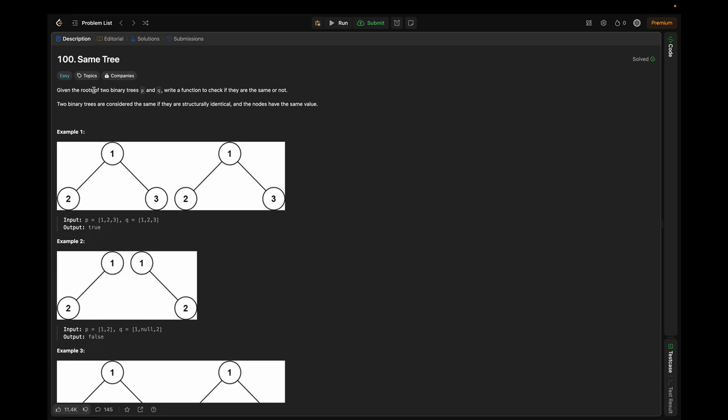The question is: given the roots of two binary trees P and Q, provide a function to check if they are the same or not. Two binary trees are considered to be the same if they are structurally identical and the nodes have the same value. Example one here shows two trees where the nodes have the same value and are structurally identical, so this is true.